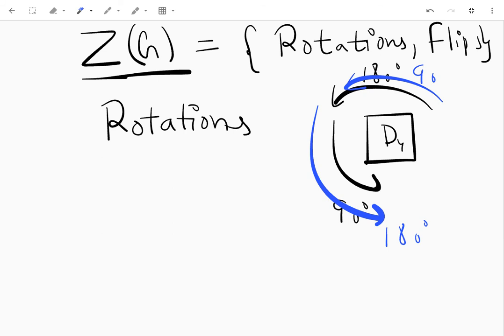So rotations always commute with each other. Now our focus should be on the flips, because we are looking for the elements that commute with rotations as well as flips. So first thing is clear that rotations commute with rotations.